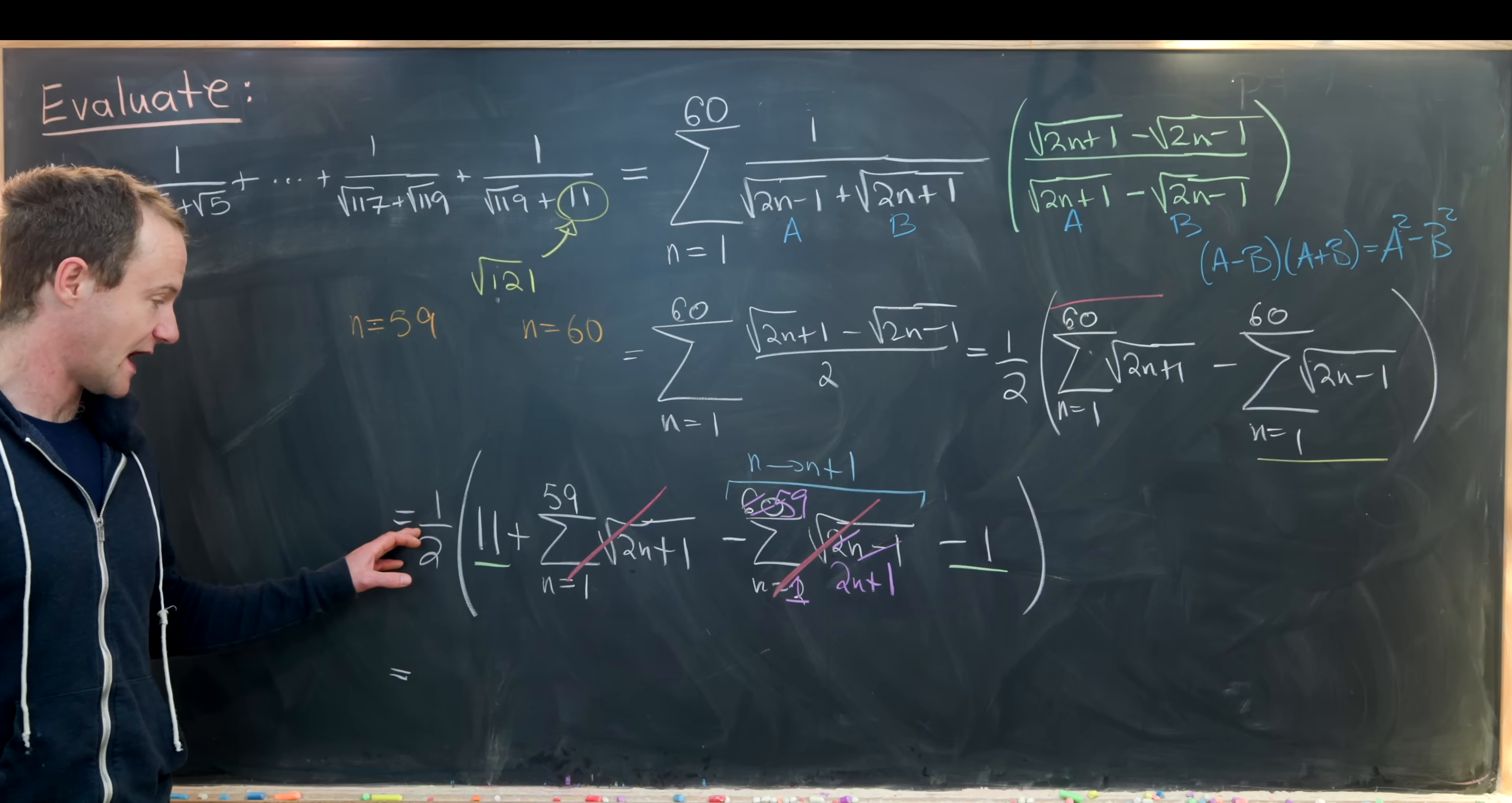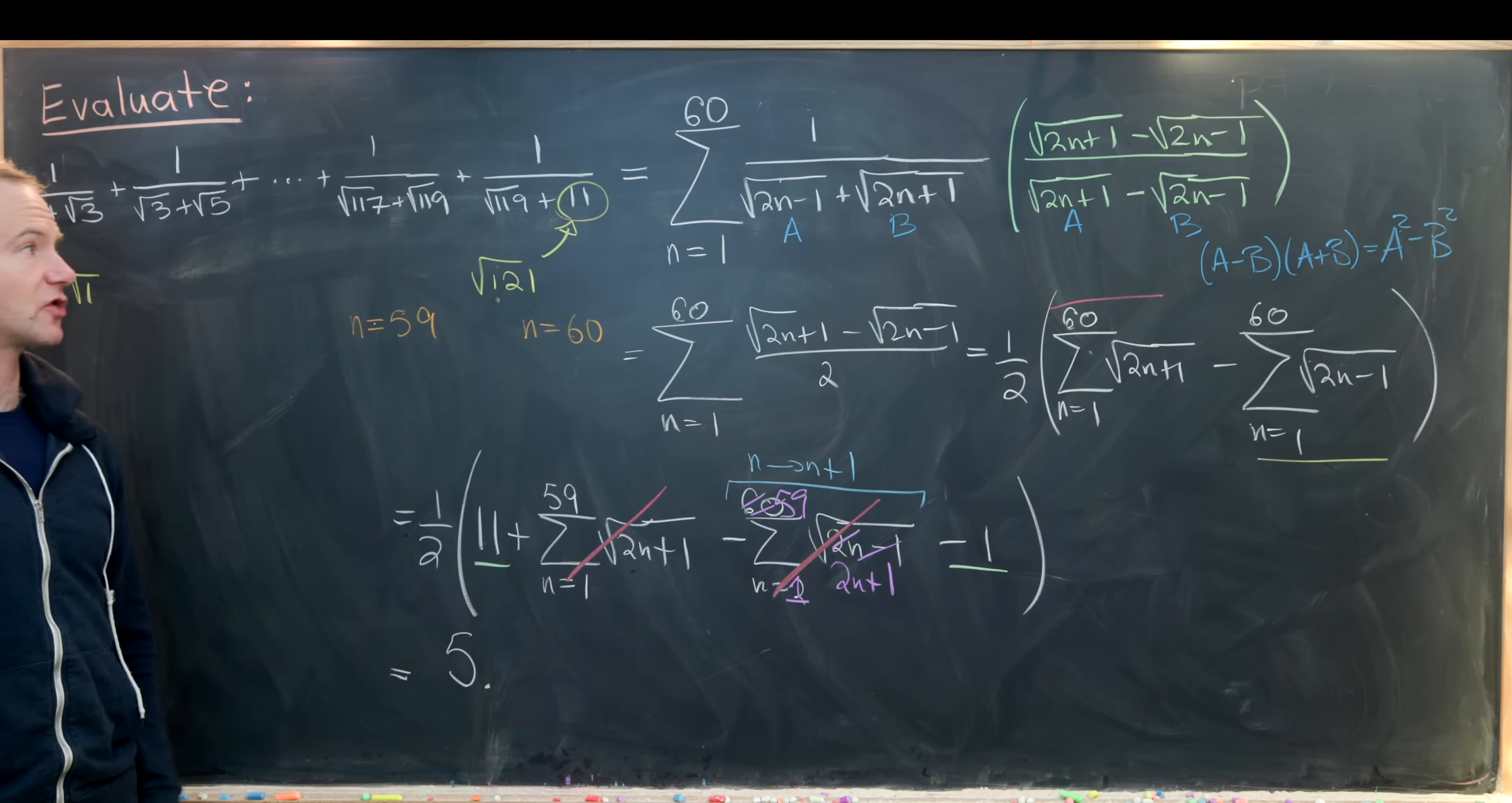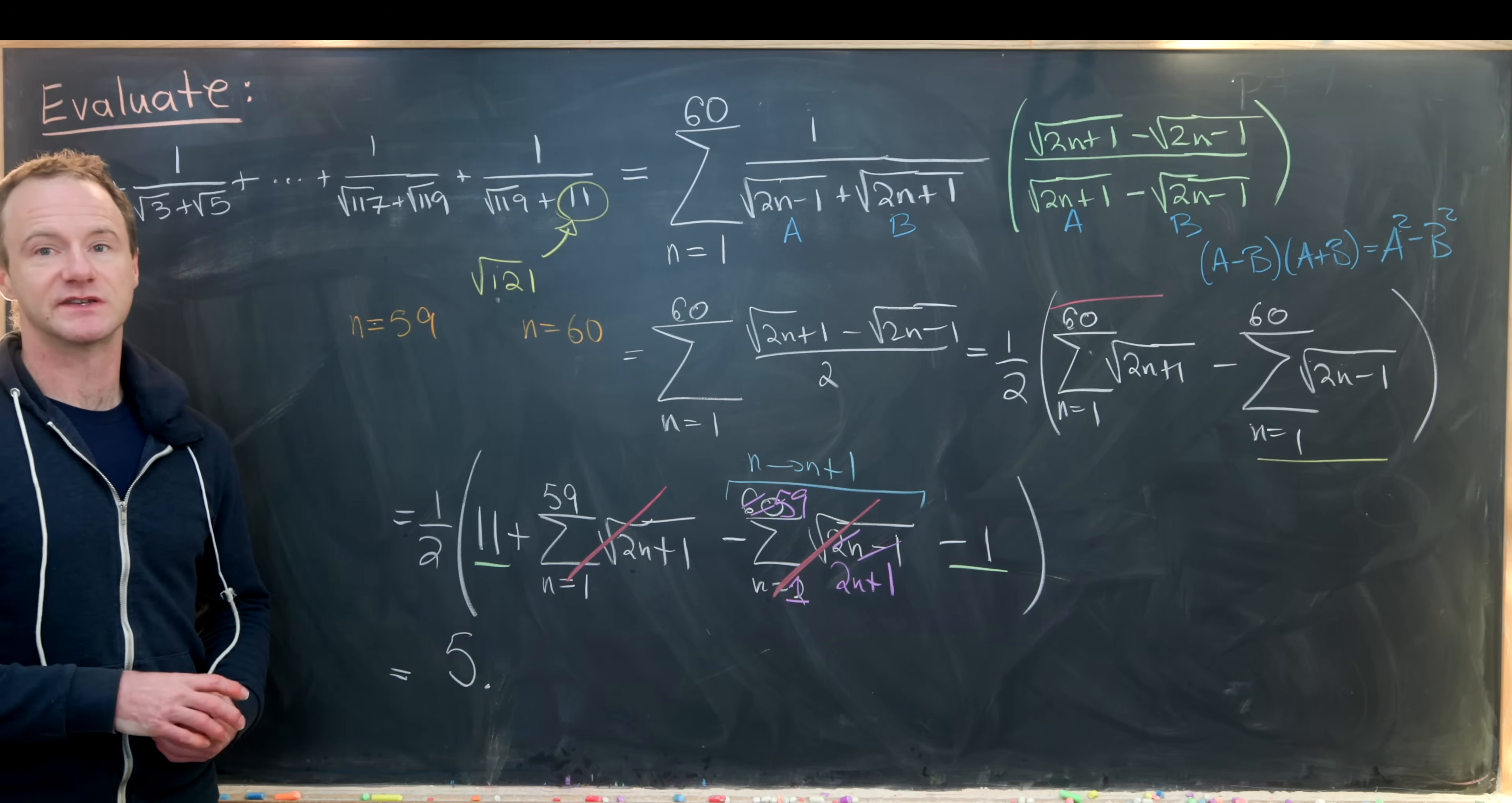We're left with 1/2 times (11 - 1), or 1/2 times 10, which is 5. This thing that started out looking like a crazy sum which would not be simplifiable is in fact just the number 5. That's a good place to stop.